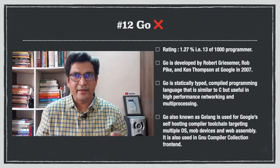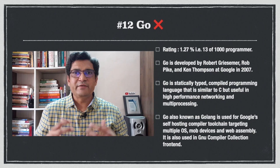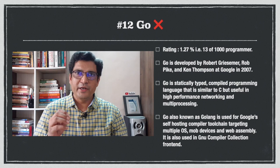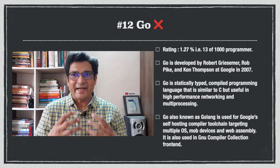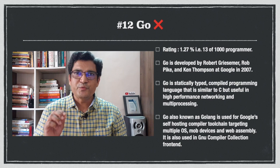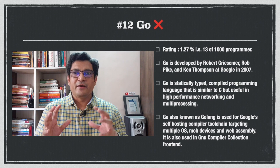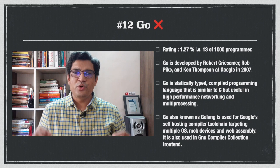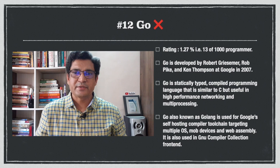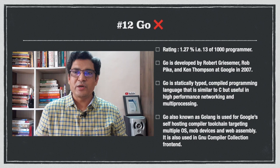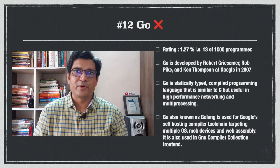At number 12 is Go, also known as Golang. Go was developed by Robert Griesemer, Rob Pike, and Ken Thompson at Google in 2007. Go is a statically typed, compiled programming language similar to C but useful in high-performance networking and multiprocessing. It is used as Google's self-hosting compiler toolchain targeting multiple operating systems, mobile devices, and WebAssembly, and also in the GNU compiler collection for front-end programming.